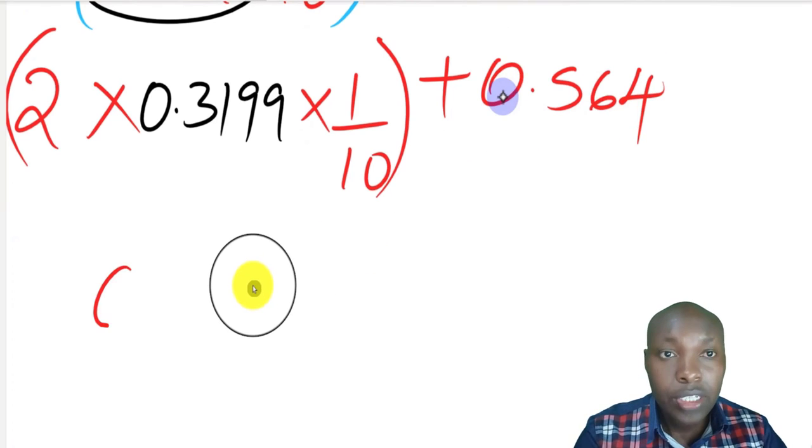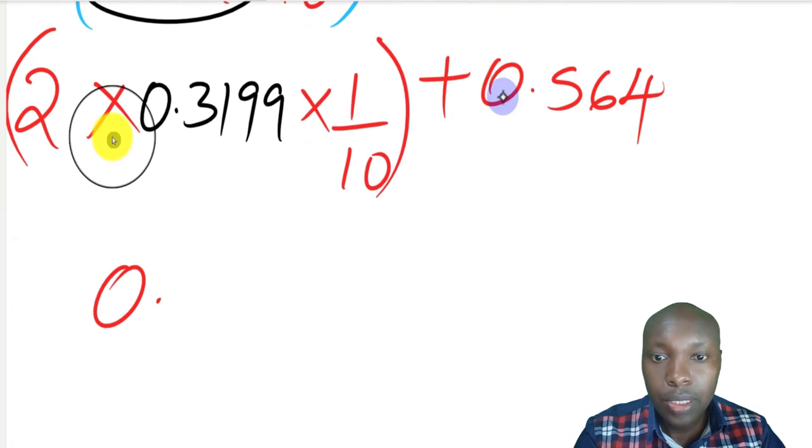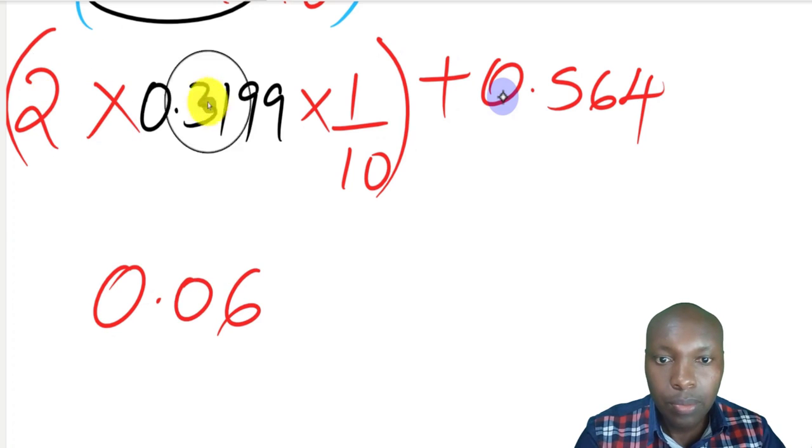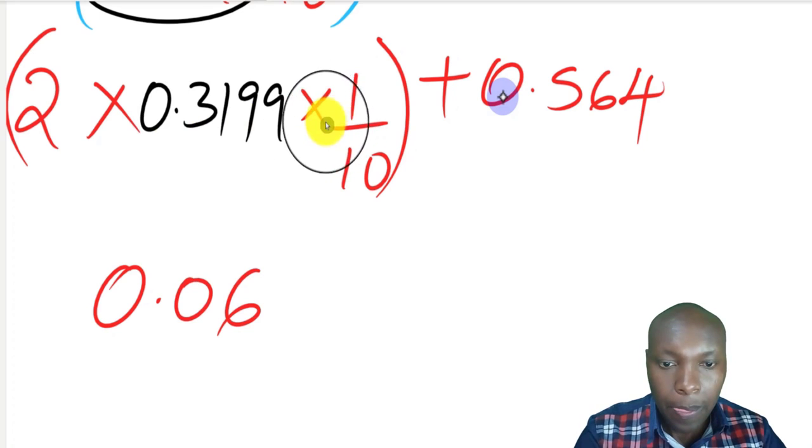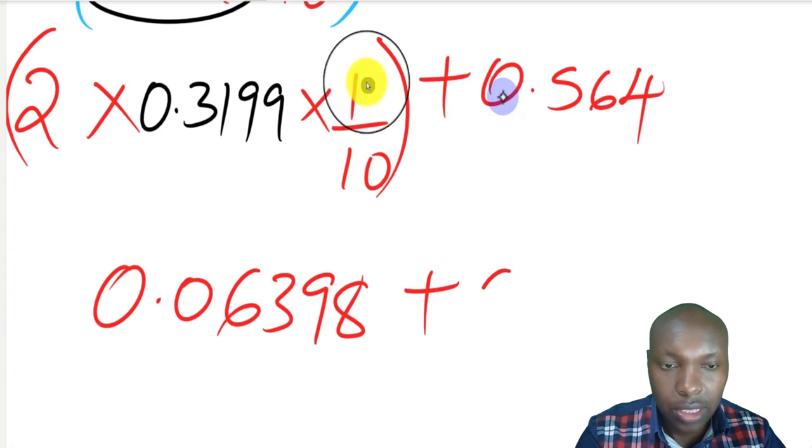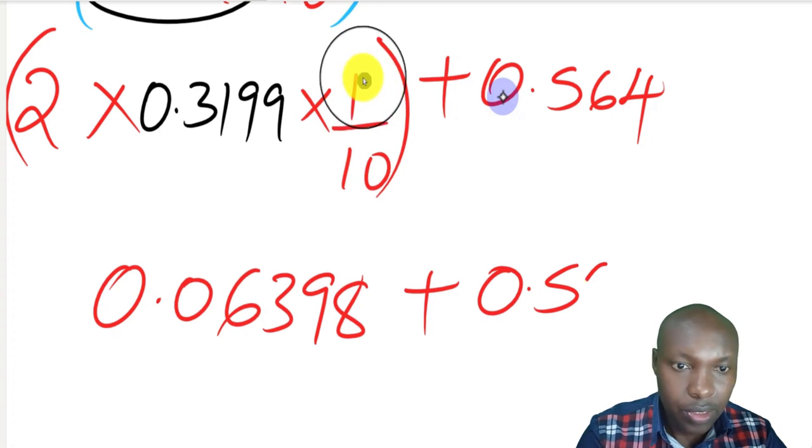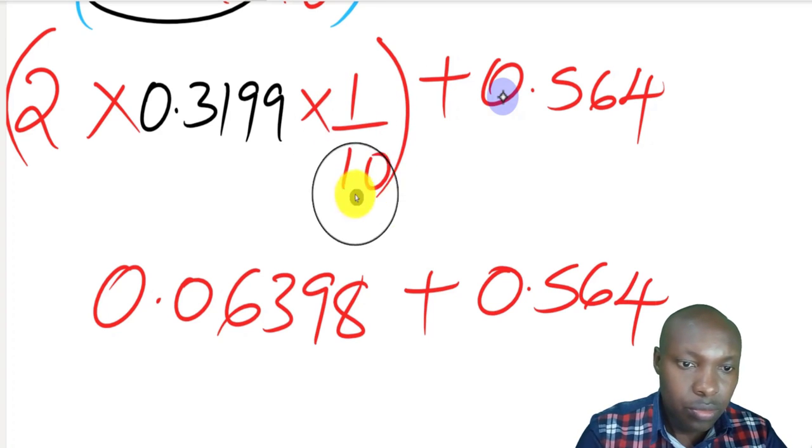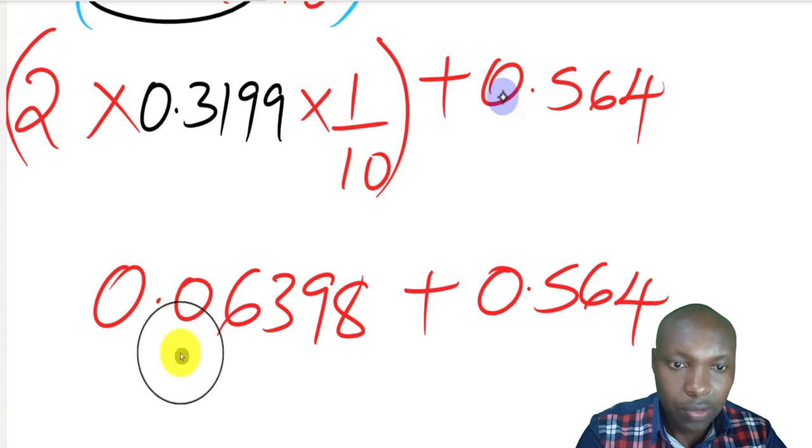What is remaining now is to get the product of these numbers: 2 multiplied by 0.3199, multiplied by 1 over 10. That gives 0.06398. But remember, we don't get the reciprocal of 1 over 10. We get 0.06398, then we add 0.564.